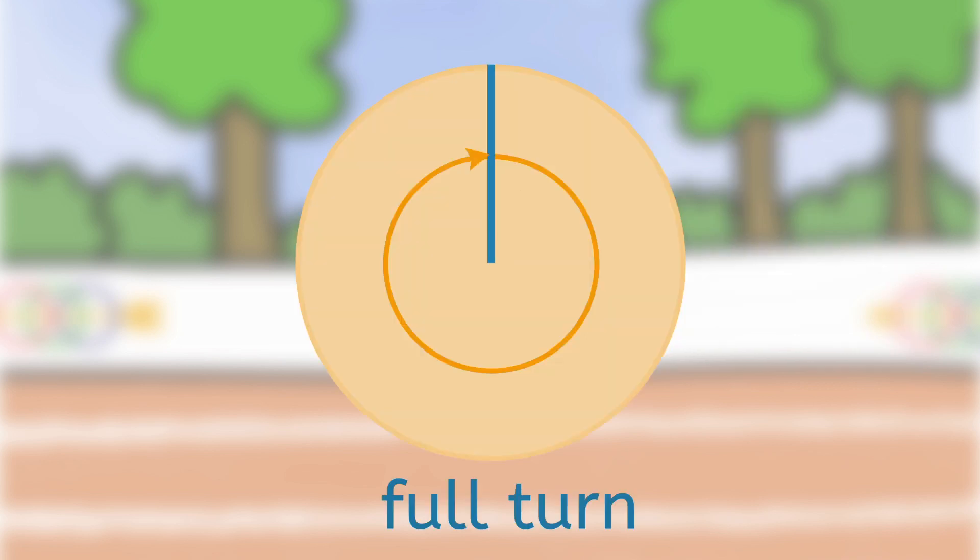A full turn is when a line goes round in a complete circle. It's measured at 360 degrees.